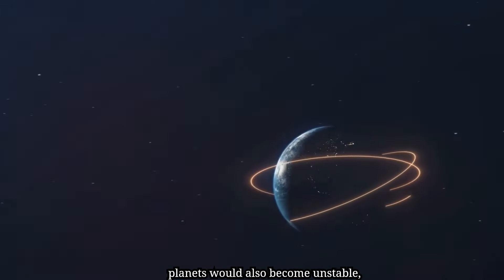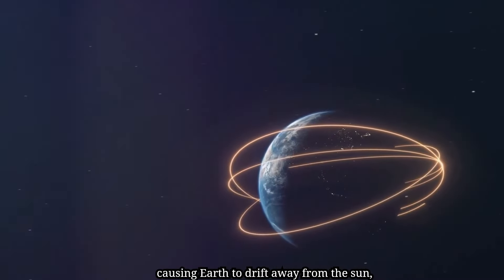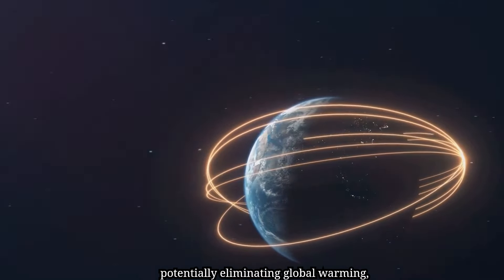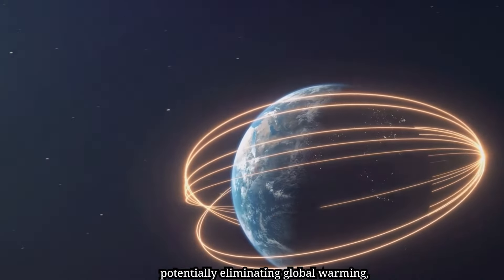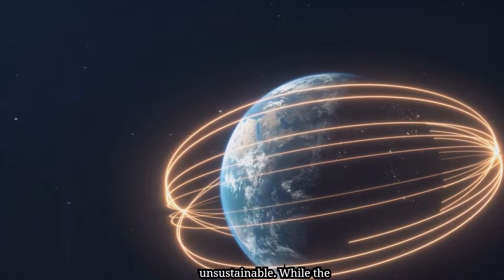The orbits of planets would also become unstable, causing Earth to drift away from the Sun, potentially eliminating global warming, but at the cost of making life unsustainable.